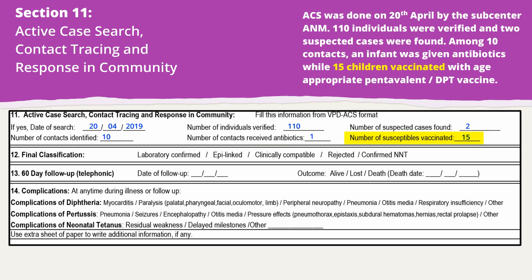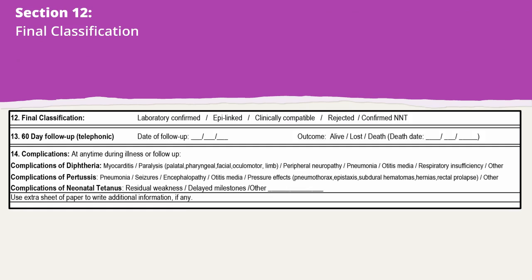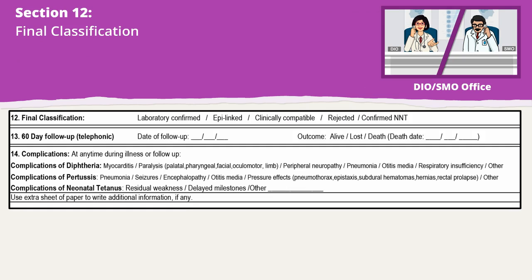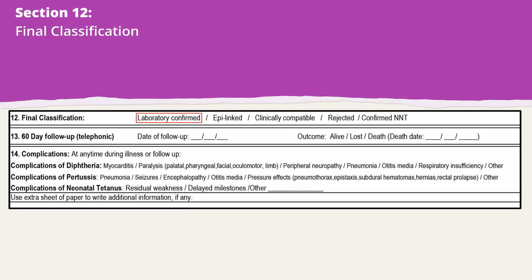In section 12, the DIO or SMO needs to update the CIF with the final classification as laboratory confirmed, epidemiologically linked, or clinically compatible. Rejected means not fulfilling the case definition of the disease, and no IPID number should be allotted to rejected cases. In NNT cases, encircle confirmed NNT if the case fulfills the case definition.